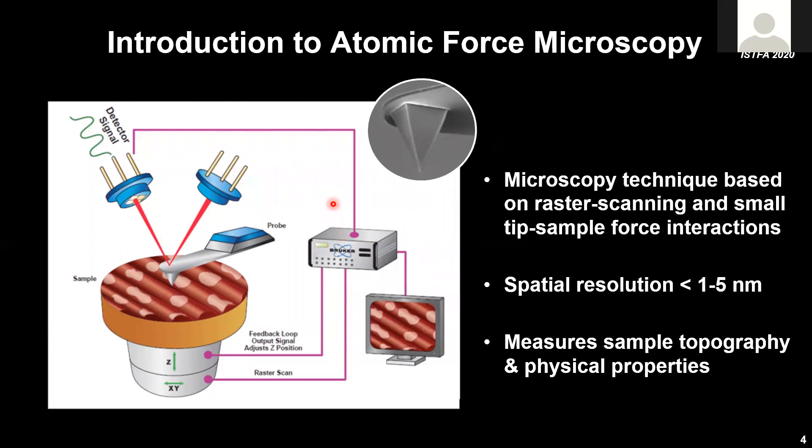An AFM is a high spatial resolution microscope technique based on the raster scanning of a very sharp probe or needle across the surface of interest, scanning line by line, hence creating 3D images of the surface. When using a very sharp tip at nanometer size, we can get down to nanometer spatial resolution.